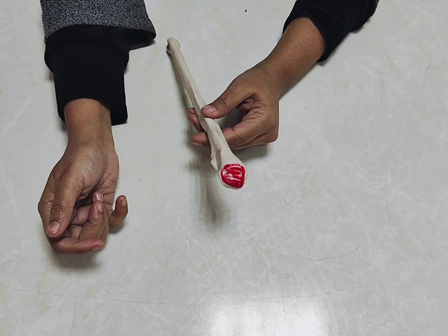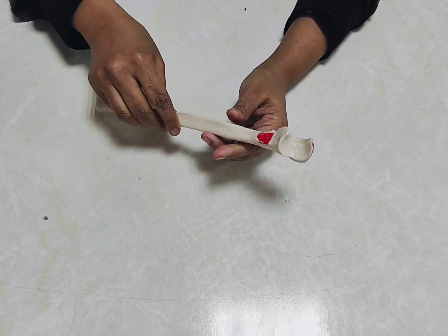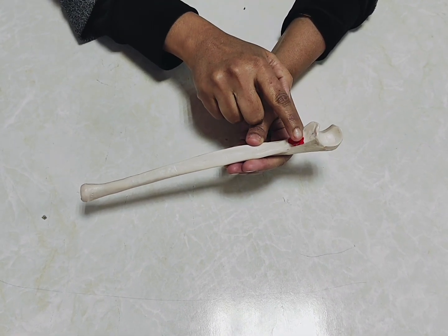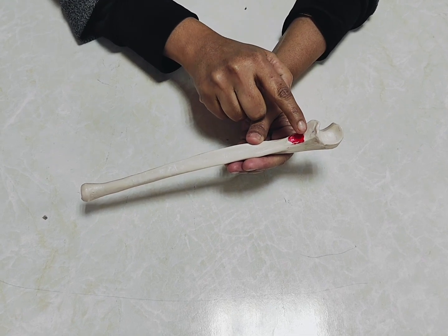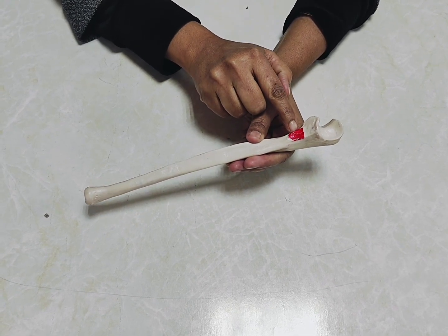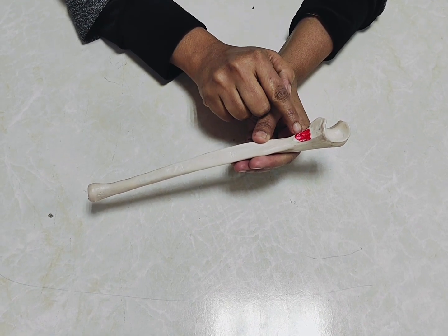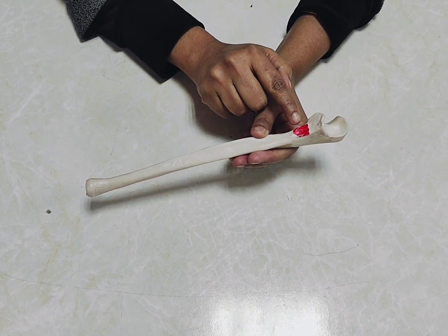Then in the coronoid process, anteriorly there is a roughened area called ulnar tuberosity. We may mark here and ask you to identify this area and what muscles will be attached here. You have to say this is ulnar tuberosity and brachialis muscle will be inserted here.